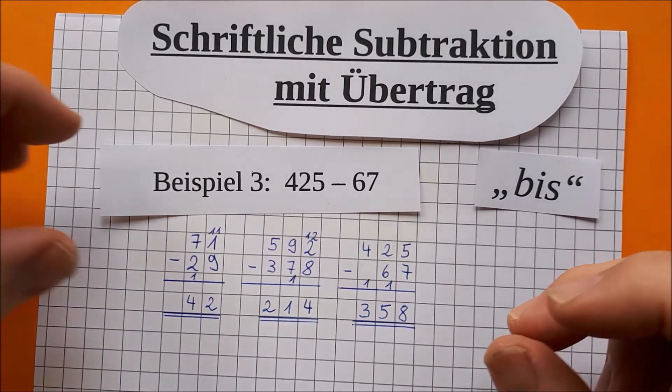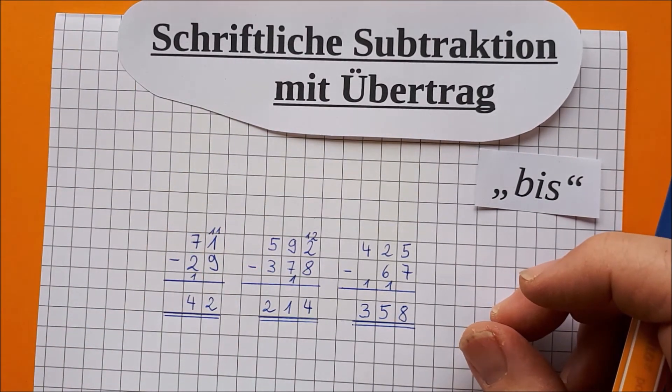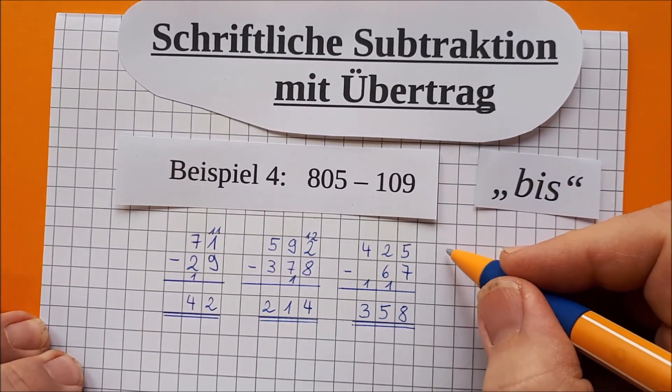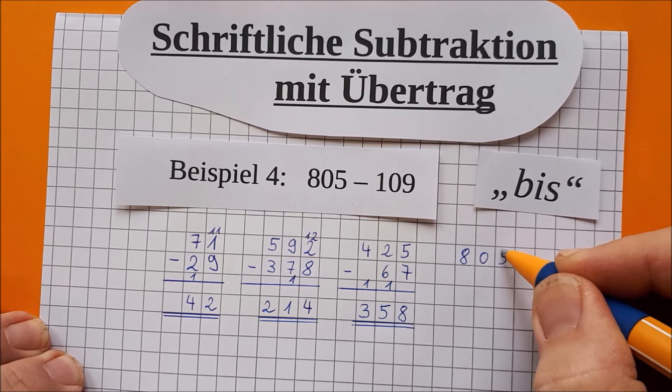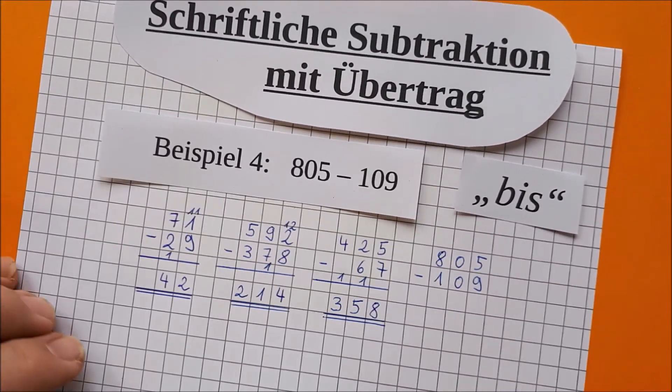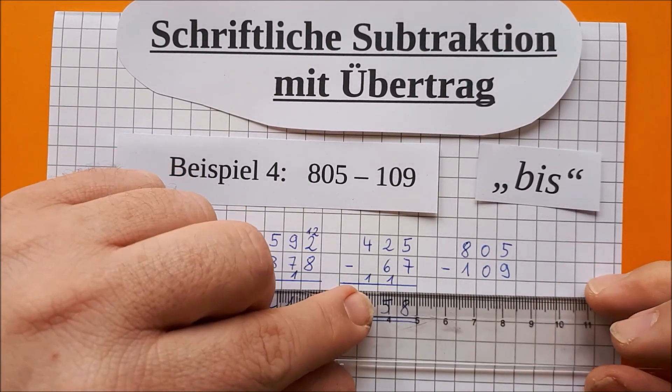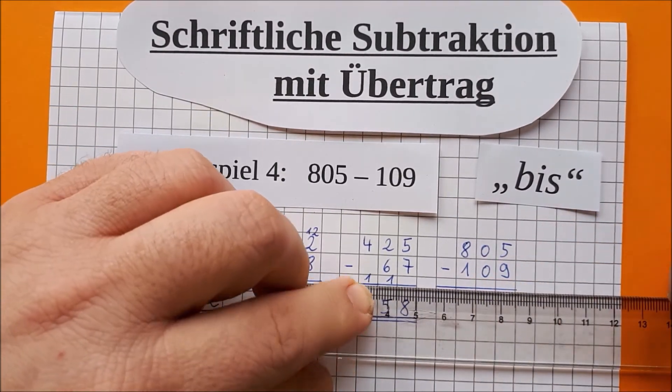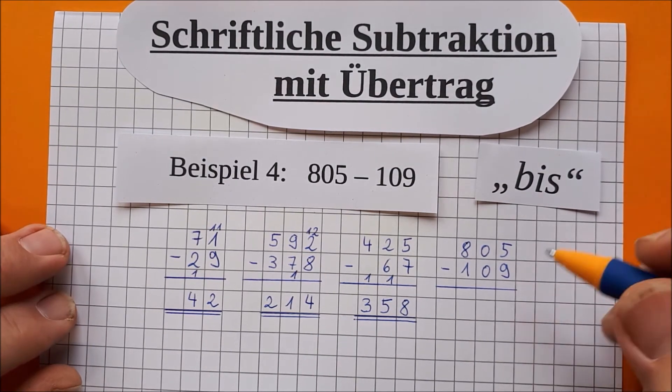Und wir haben noch eine letzte Beispielaufgabe. Aber dazu muss diese erstmal weg. Und dafür kommt die andere dazu. Ah, diese Nullen. Ich liebe Nullen. 805 minus 109. Dann wollen wir doch mal sehen, was wir daraus machen können. Dummdi dummdi dumm. Strich ist in der Mitte der Kästchenreihe.